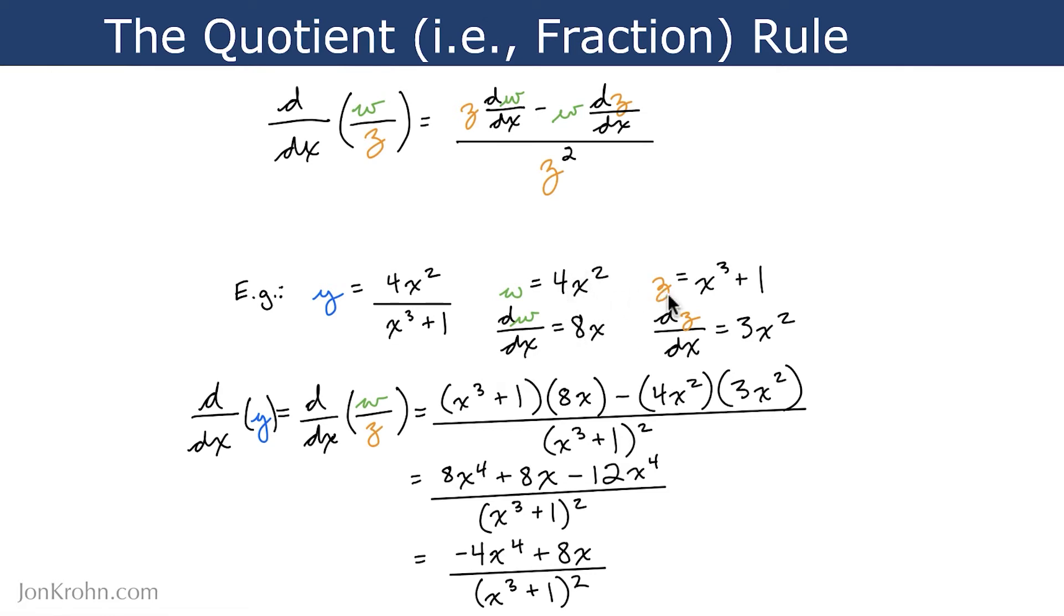Z has two terms, but the second term is just a constant, so that becomes 0. We can ignore it. x cubed becomes 3x squared according to the power rule, because we subtract 1 from the power. That becomes 2. We move the power in front, so 3x squared.